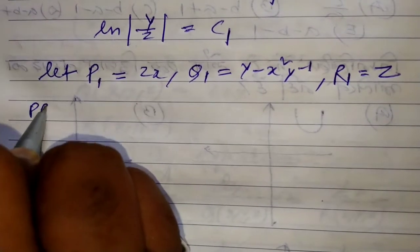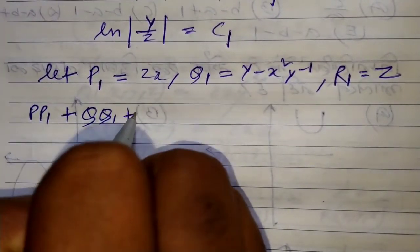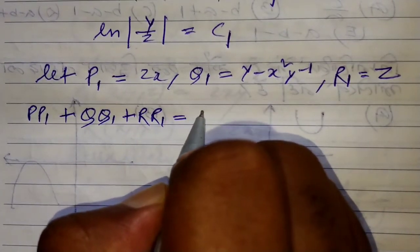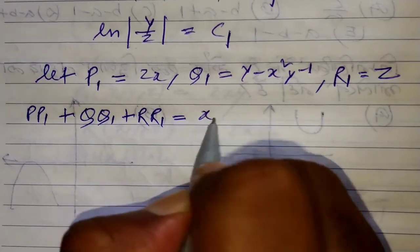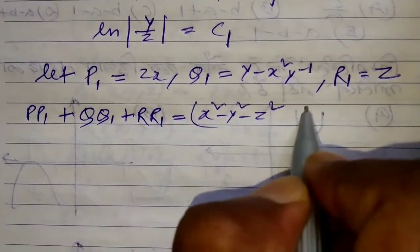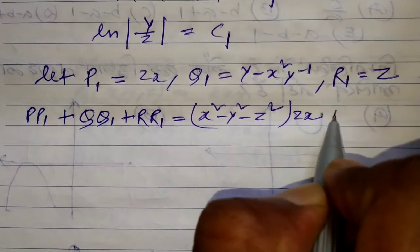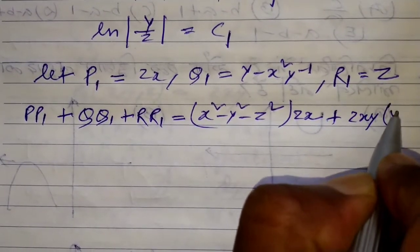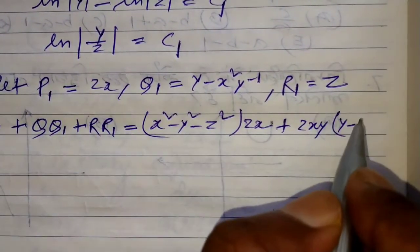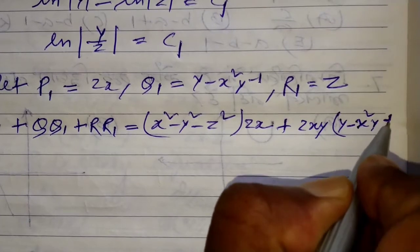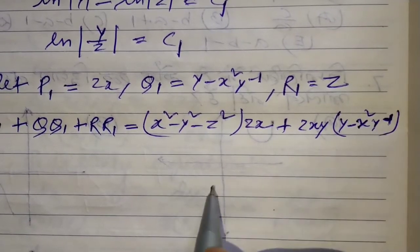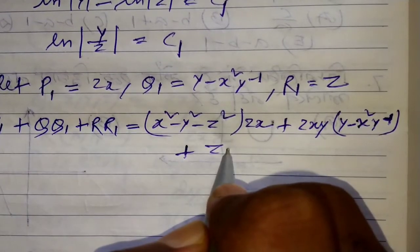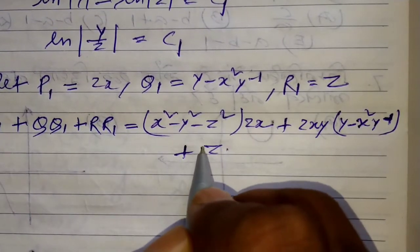Now PP₁ + QQ₁ + RR₁, where P is (x² - y² - z²), P₁ is 2x, Q is 2xy, Q₁ is (y - x²y⁻¹), R is 2xz, R₁ is z.